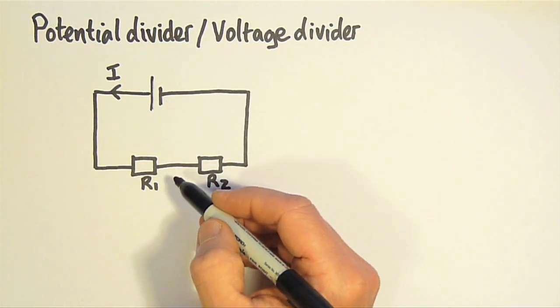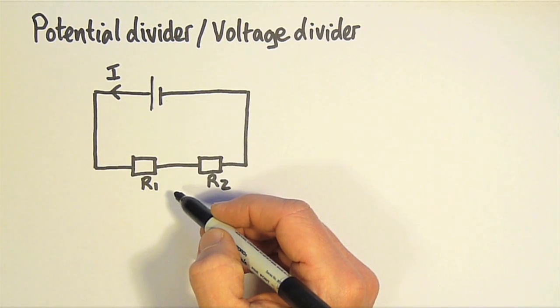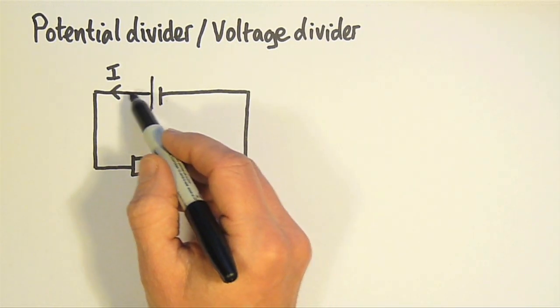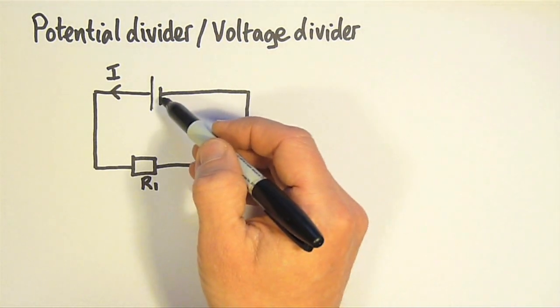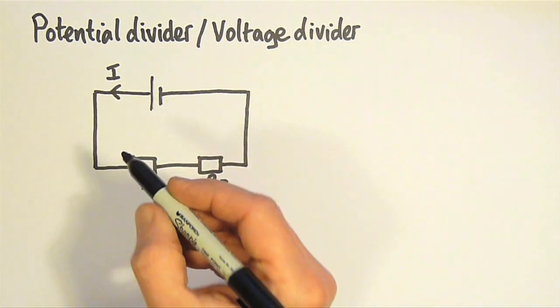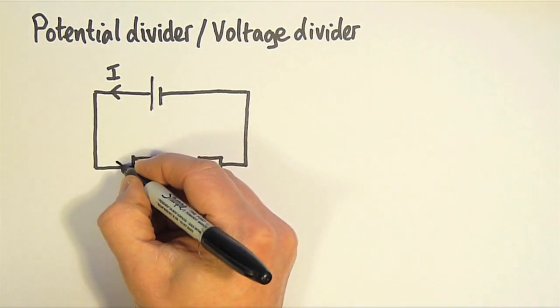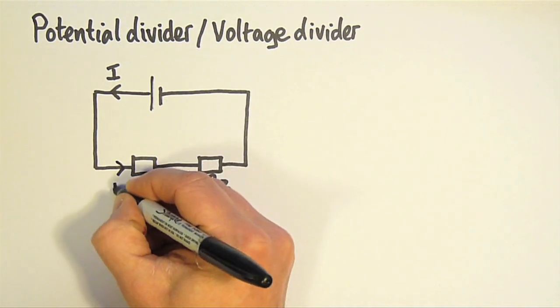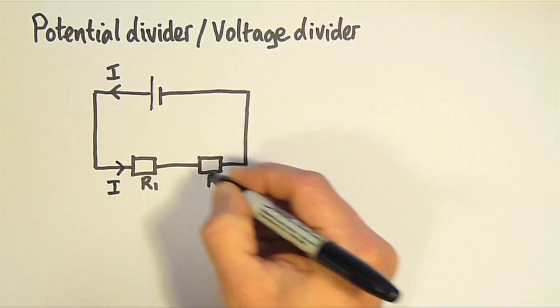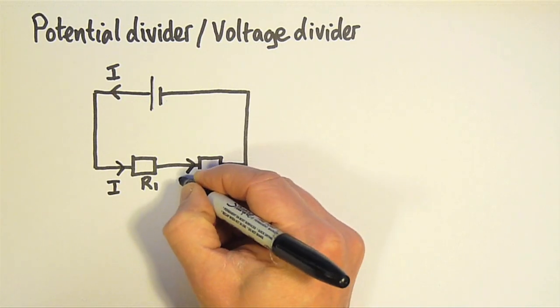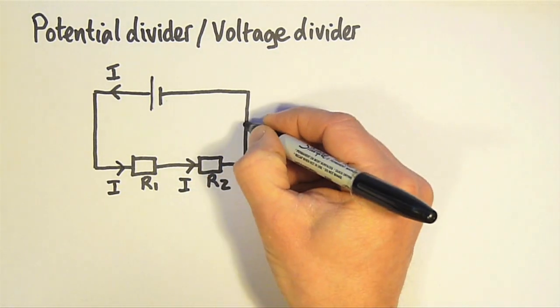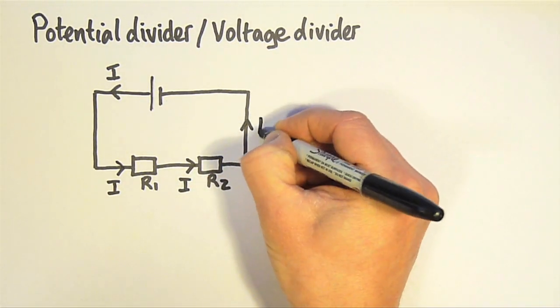Let's write down what we know about this circuit already. It's a series circuit, so the current through the circuit is the same at all places. So the current through R1, I, is the same as the current through R2, I, and that's the same as the current that returns to the battery.